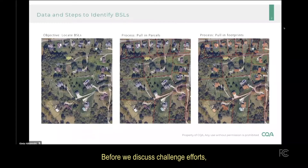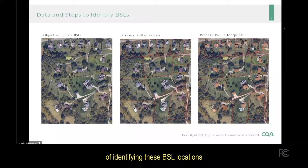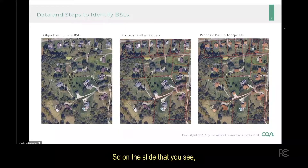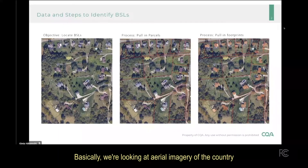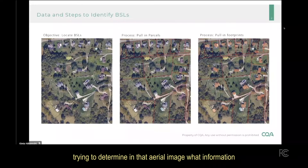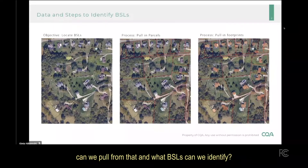Before we discuss challenge efforts, let me walk you through the initial process of identifying these BSL locations. On the slide that you see, the process combines multiple data sources. In the first image on the left-hand side, we start with a blank slate — basically, we're looking at aerial imagery of the country, trying to determine what information we can pull from that and what BSLs we can identify.